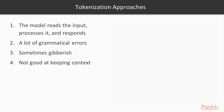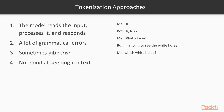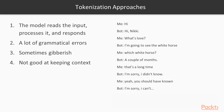You can see an example of a conversation between me and a neural chatbot. I say: Hi. The bot responds: Hi, Nikki. I ask: What is love? It responds: I'm going to see the white horse. Which white horse? A couple of months. That's a long time. I'm sorry, I didn't know. Yeah, you should have known. I'm sorry, I can't. Why? Because I've never been here before.